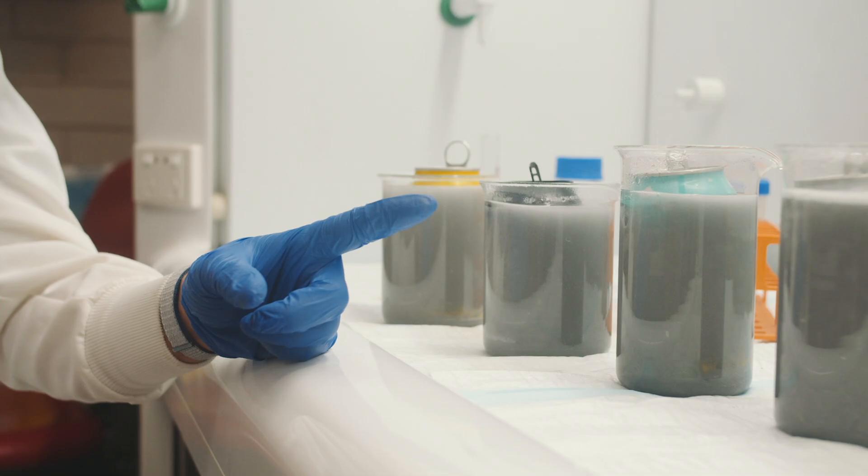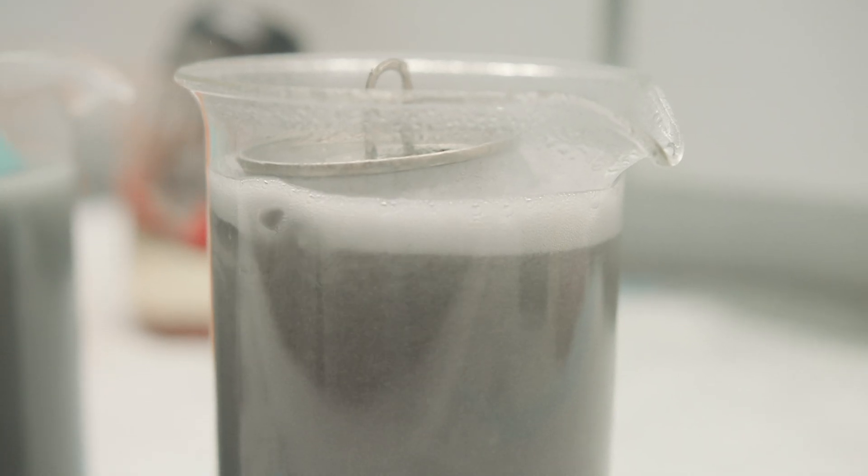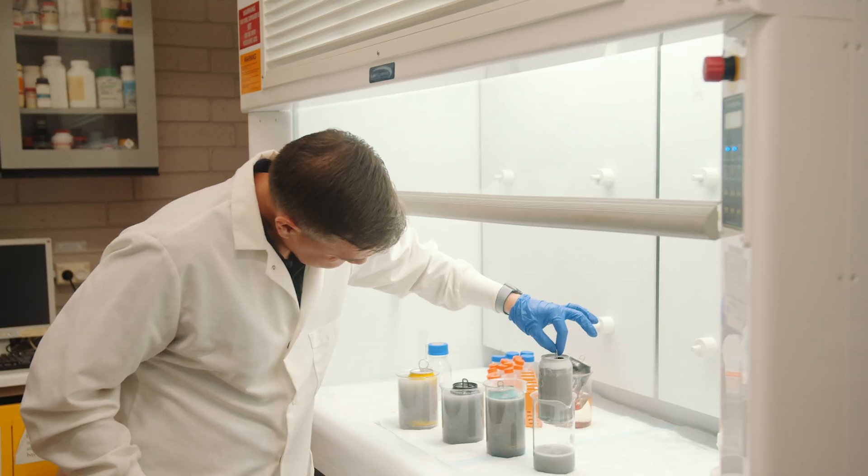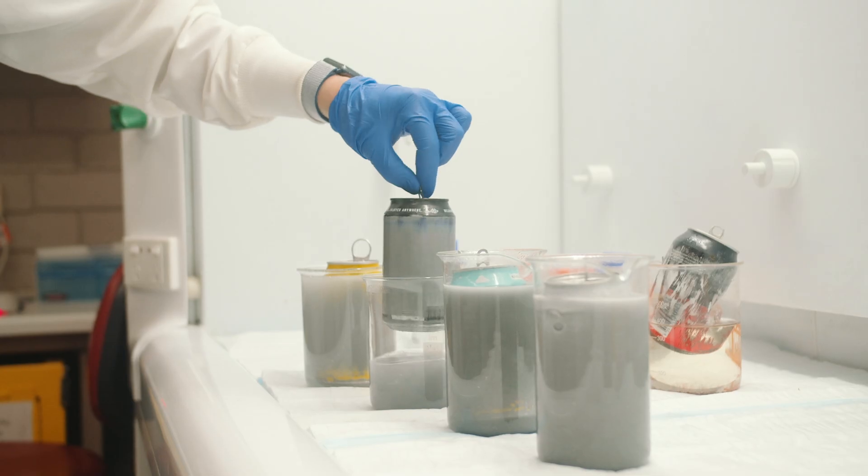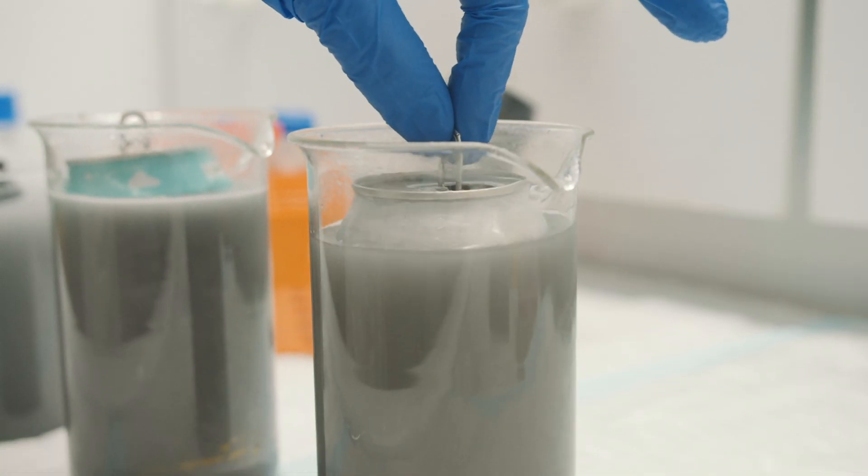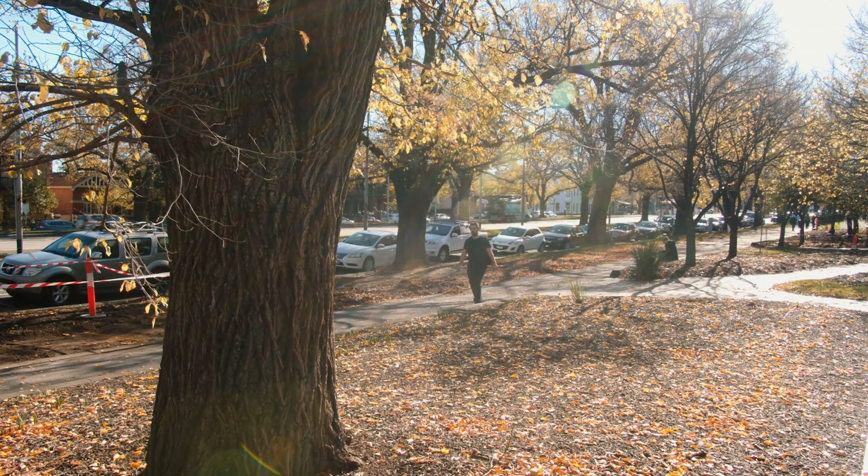One of the things I was really surprised to find out is that beer in particular seems to be able to leach the BPA chemical from that liner into the fluid itself. A number of different surveys have looked at the level of BPA in beer, and it's actually quite high compared to other beverages that you might consume from a can. The bad thing about BPA is it's one of the chemicals we call an endocrine disruptor, which interferes with the way hormones work in our body.